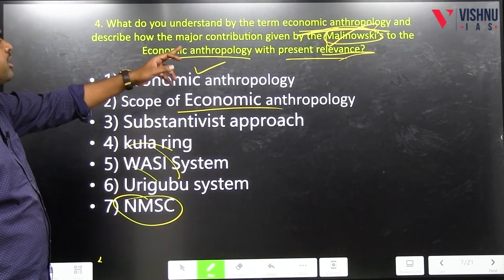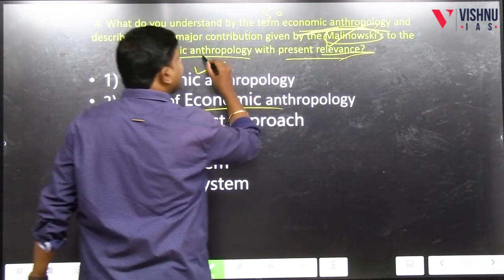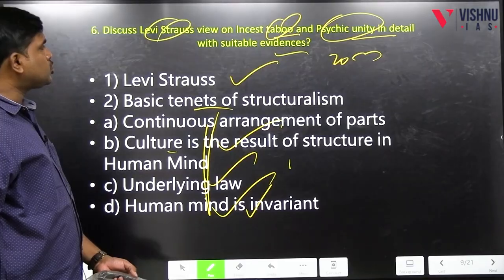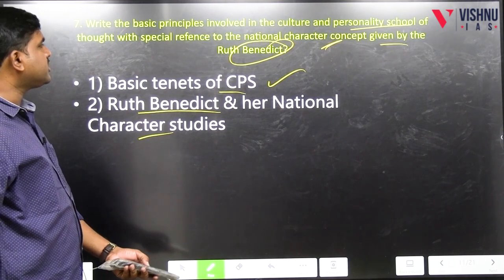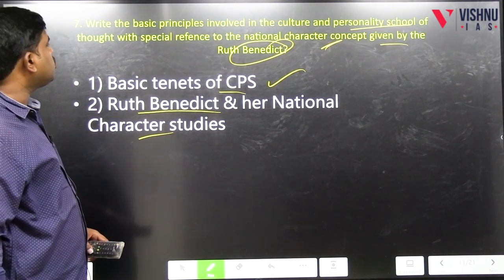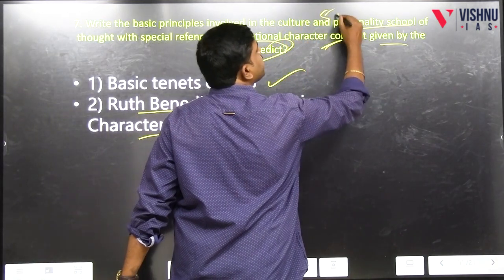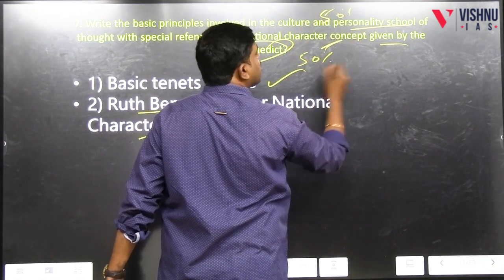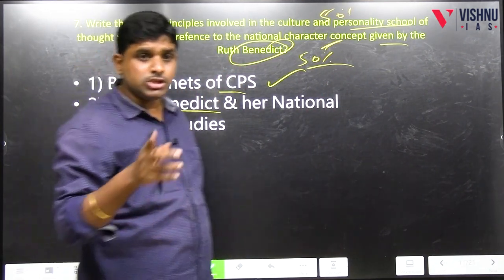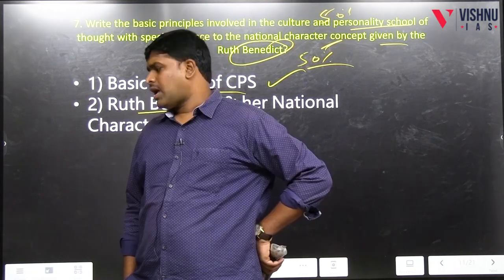Economic anthropology question: 50 percent for what you understand by economic anthropology; 50 percent for Kula Ring and its present relevance. Basic principles of culture personality school: 50 percent for the school, 50 percent for Ruth Benedict's national character concept. Whenever there are observations, applications, or significance, it should be 40 percent. Current relevance: 40 percent.